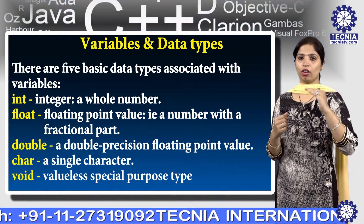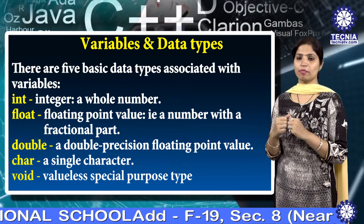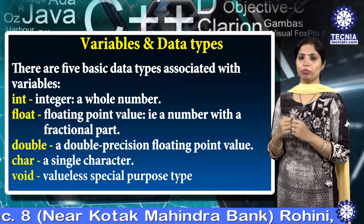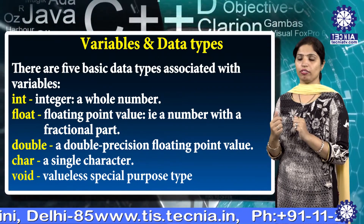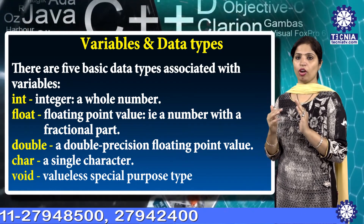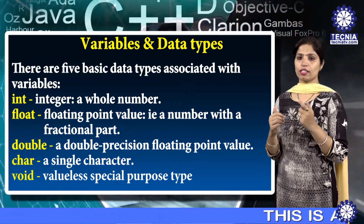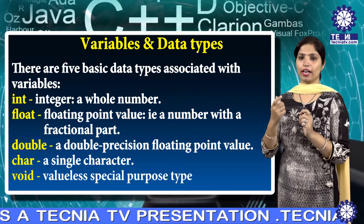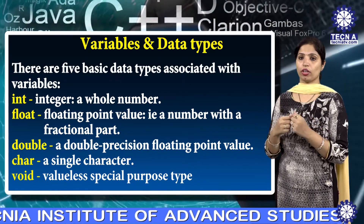A variable that is not initialized has an unknown value before the first assignment is made. Rules for constructing a variable name: first, it must begin with a letter of the English alphabet or an underscore. Second, a variable name is any combination of 1 to 31 alphabets, digits, or underscores; however, only the first eight characters are treated as significant. Third, uppercase and lowercase are significant.